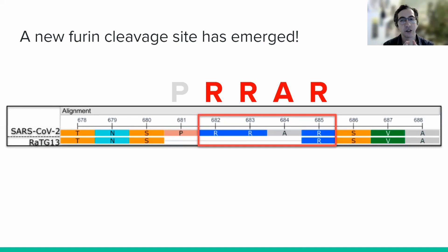The fact that the PRRA insertion forms an RRAR furin cleavage site is rather suspicious. This is because the furin cleavage of this protein in coronaviruses is known to be associated with increased infectiousness. In other words, coronaviruses with a furin cleavage site tend to be more infectious than coronaviruses without one. Well, Eureka! The 4-letter insertion that we found just happens to create the cleavage site for furin. Not a likely coincidence, right?